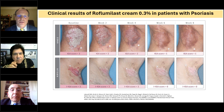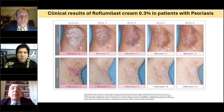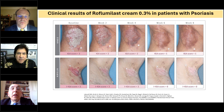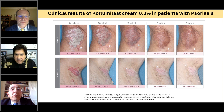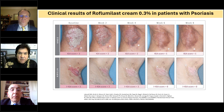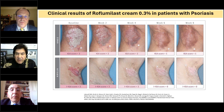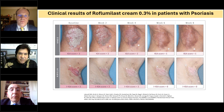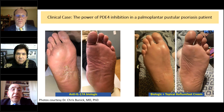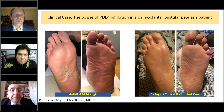Until now, we did not have anything formally studied in a phase three study specifically for intertriginous psoriasis. The other agents were used in intertriginous areas in clinical trials, but they didn't do a separate IGA on just intertriginous areas nor separate analysis of safety and tolerability. That's the first time that's been done with topical roflumilast. The corticosteroids require great care in those areas, and there's actually been a new phase four study for another nonsteroidal topical for intertriginous areas as well.